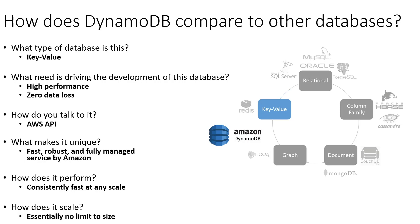DynamoDB is massively distributed to this end, and that massive distribution also leads to higher performance because your DynamoDB database can be literally spread across dozens or hundreds of servers all over the world, so that it can be near to the users. If you have an outage in one data center on one continent, it's not going to impact the rest of your database.